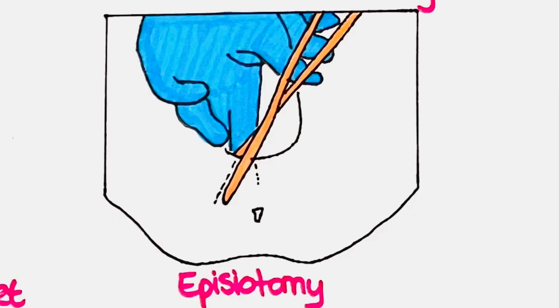The last general rule is that a mediolateral episiotomy is performed in every primigravida — every woman giving birth for the first time — and in selected multiparae. An episiotomy is an incision in the perineum; for a breech delivery we usually choose the mediolateral episiotomy. This is done to avoid a spontaneous rupture of the perineum, which can lead to severe injury of the maternal organs and result in great blood loss. An episiotomy is done when the skin of the perineum is tense and becomes transparent.